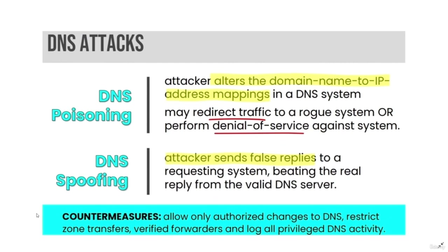DNS attacks include DNS poisoning and DNS spoofing. DNS poisoning is when an attacker alters the domain name to IP address mappings in the DNS system, potentially redirecting traffic to a rogue system or performing denial of service. DNS spoofing is when an attacker sends false replies to a requesting system, beating the real reply from a valid DNS server. Countermeasures include allowing only authorized changes to DNS, restricting zone transfers, verifying forwarders, and logging all privileged DNS activities.